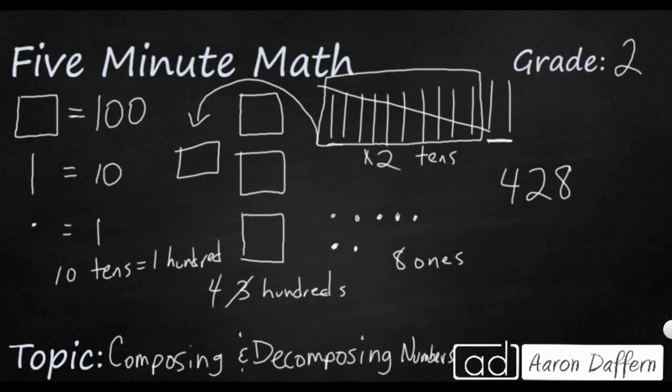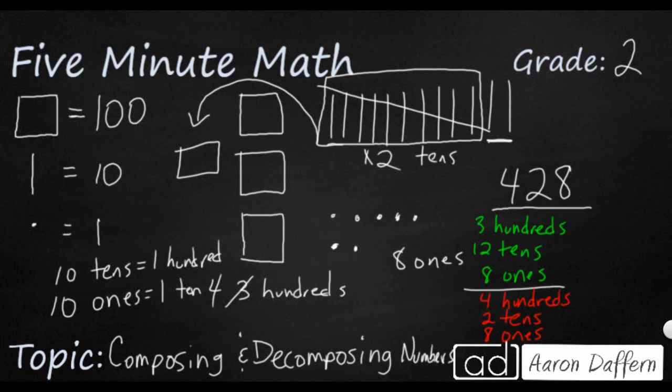Now we remember that we exchanged 10 tens for a 100. It's not the only exchange you can make. Sometimes you're going to get a whole lot of ones. And if you get 10 ones, that's going to equal 1 ten. So that's another exchange or another trade that you can keep in mind. So in green is the first way we built 428, and in red is the second way we built it.